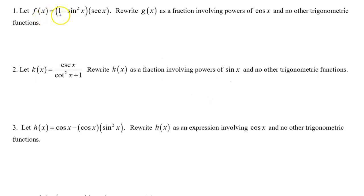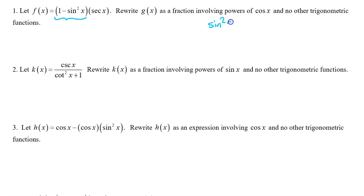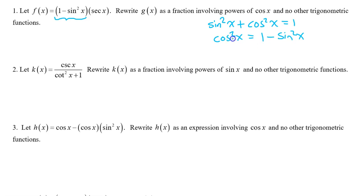Number 1. Let f of x equal 1 minus sine squared x times secant x. Rewrite f of x as a fraction involving powers of cosine x and no other trigonometric functions. The factor 1 minus sine squared x reminds me of the Pythagorean identity: sine squared x plus cosine squared x equals 1. If we subtract sine squared x from both sides, we get cosine squared x equals 1 minus sine squared x.